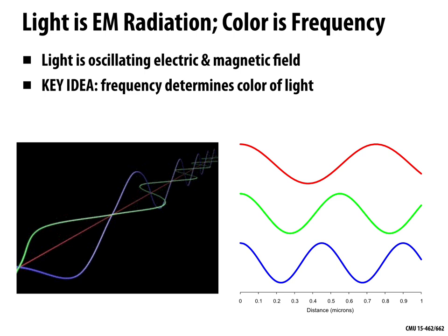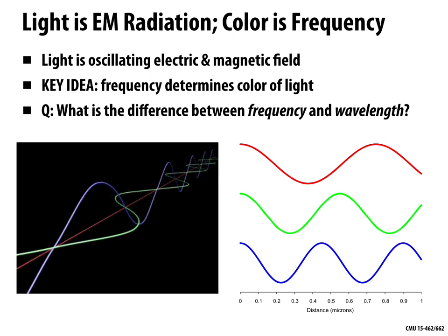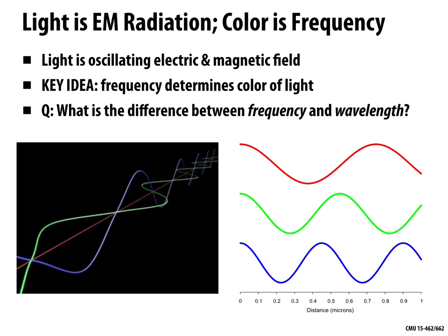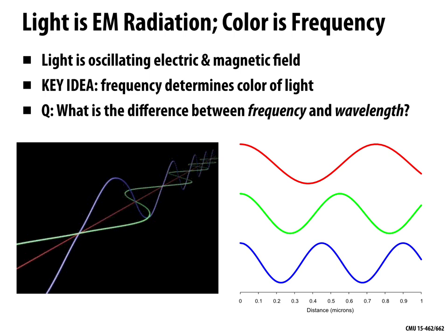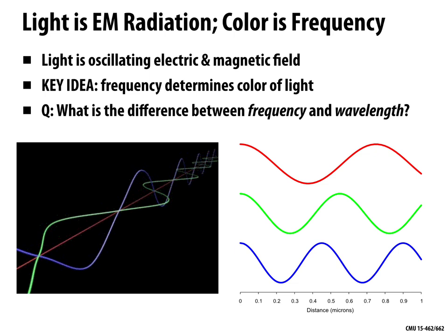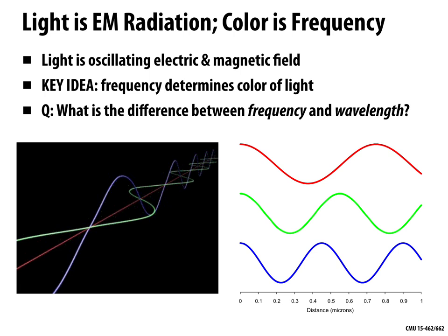One important thing to keep track of is the difference between frequency and wavelength of light. These quantities both essentially capture the same idea but are different quantities. They have a simple relationship: frequency is one over wavelength, and wavelength is one over frequency. So if I have a really long wavelength, the field is oscillating very slowly — it has a very low frequency — and vice versa.